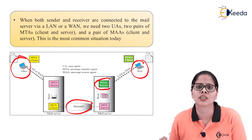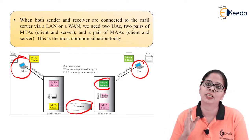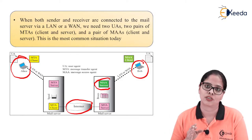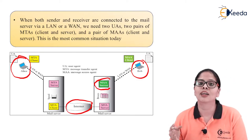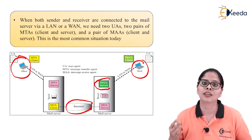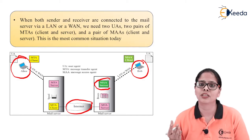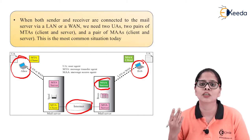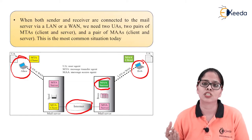In the last situation, only the sender was connected by LAN. Now here both sender and receiver are connected by LAN — that is the real situation. My sender and receiver are not directly connected to the mail server. For example, when you use Gmail, you are not directly connected to Gmail; first you have to access Gmail.